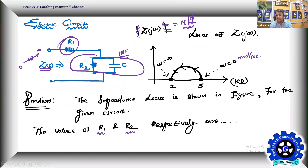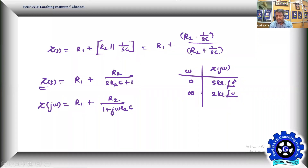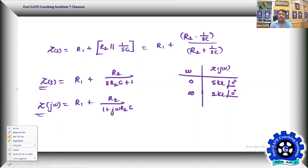Referring to the locus, the starting point at omega equal to zero is 5∠0° kΩ — purely real. The ending point at omega equal to infinity is 2∠0° kΩ — also purely real. These two data points are enough to solve the problem.